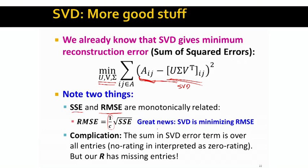However, there is one slight complication. SVD assumes that the matrix A has all entries given — the summation over ij goes over all entries of matrix A, meaning the matrix is completely filled in. But our matrix R is not filled in. Most of the matrix is empty: for most pairs, we don't know how much a given user likes a given movie. If we just ignored those parts, no rating would be interpreted as a zero rating, which is clearly wrong. So R has missing entries and SVD is not able to accurately account for them.